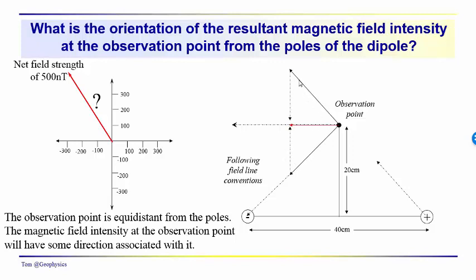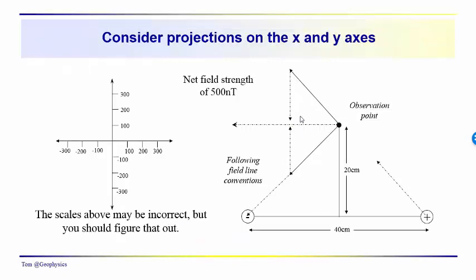Using conventions, the field intensity associated with the positive pole forms a vector in one direction, and that of the negative pole forms a vector in another direction. We can project the positive pole contribution onto the x-axis and so on. The net field strength at the observation point is 500 nanoteslas. Taking the projections onto the x-axis from the positive and negative poles, we get two vector contributions in the negative x-axis. Likewise, we get two contributions in the positive and negative y-axis.